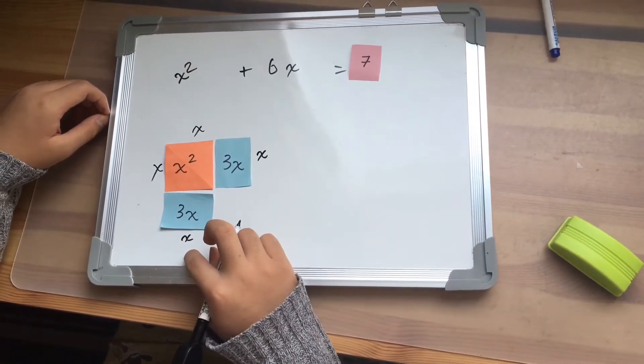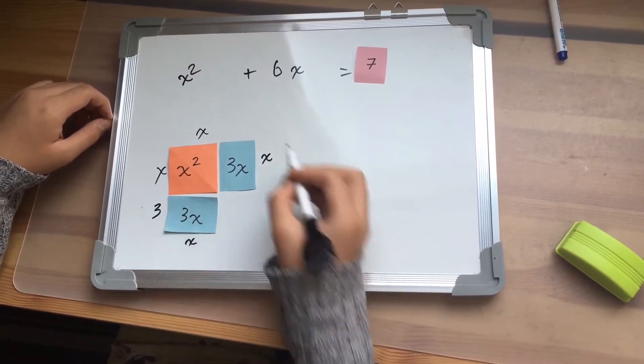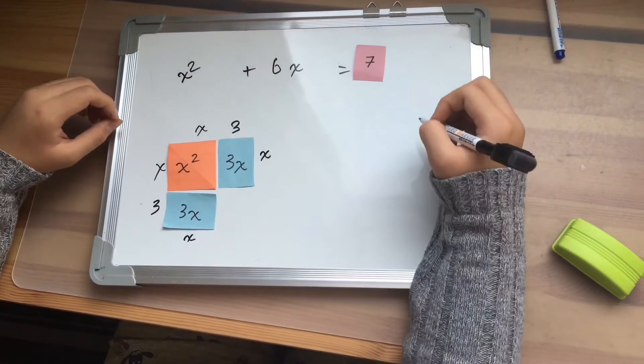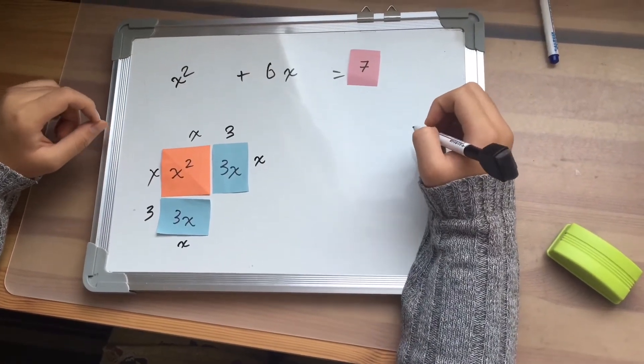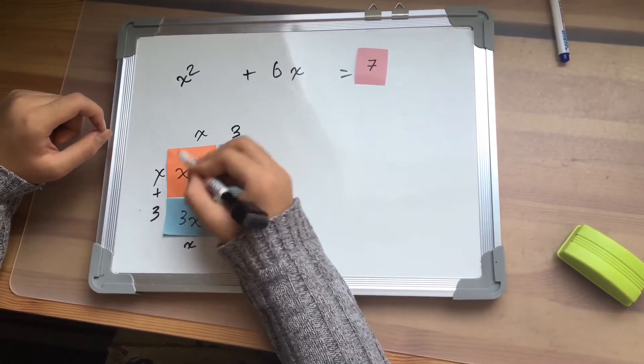Because this is an x, this should be 3 and this one as well. Now the square has a side length of x plus 3.